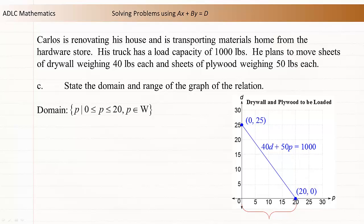Written using set builder notation, the domain is the set of all p such that p is greater than or equal to 0 and less than or equal to 20, or p is an element of the whole numbers.